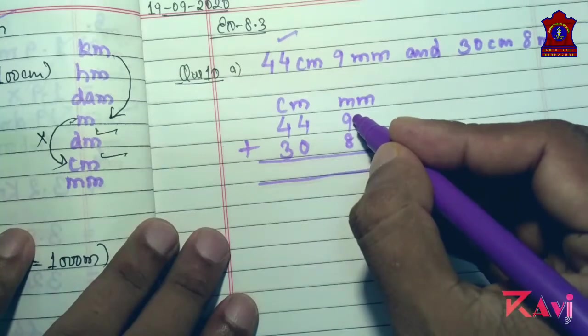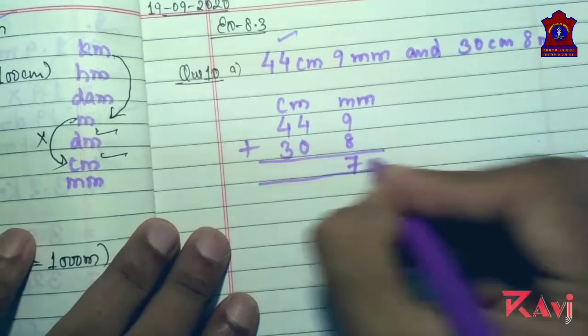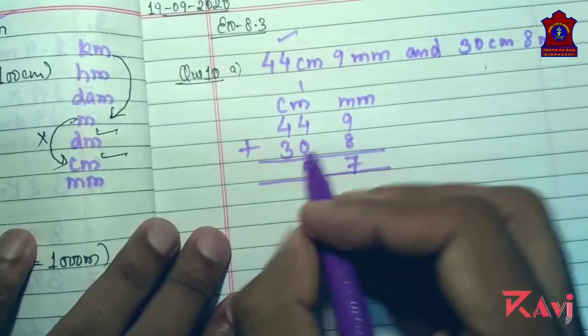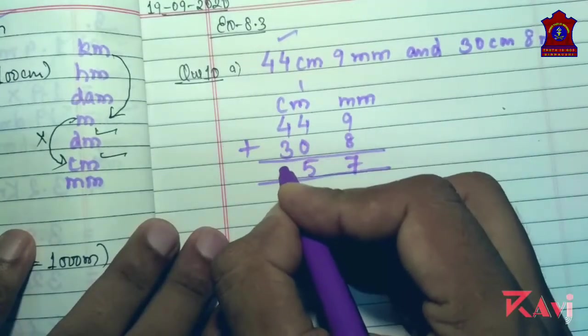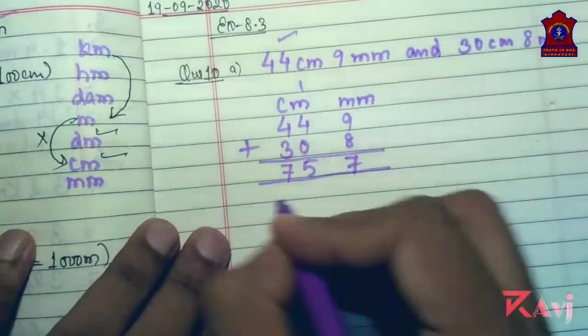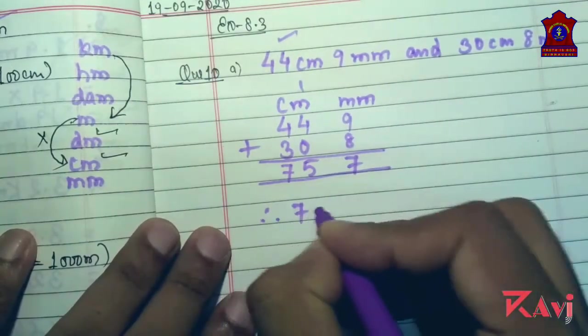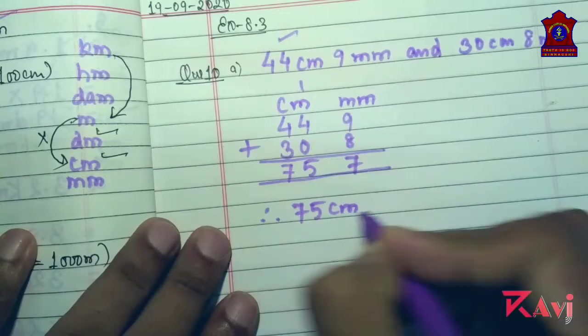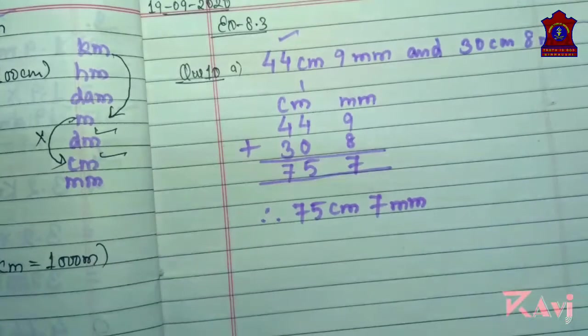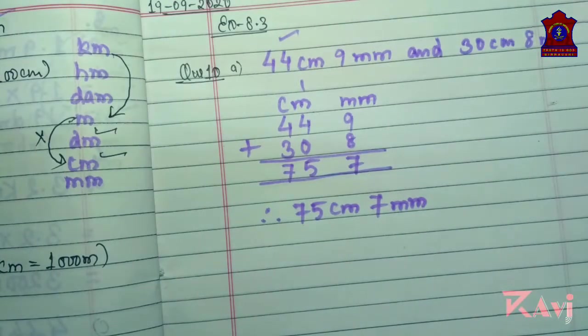Now add. 8 plus 8 is 16 and 1 is 17. 1 goes here. 4, 1, 5 and 4 and 3 is 7. The answer will be therefore 75 centimeter 7 millimeter. You can write in decimal 75.7 centimeters.